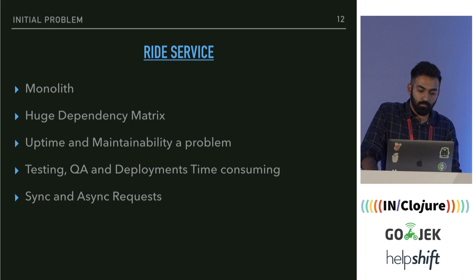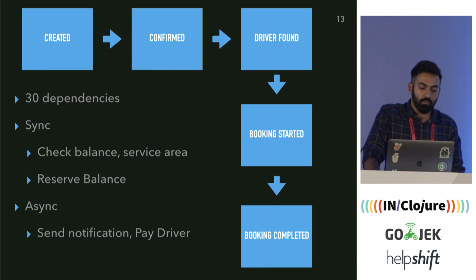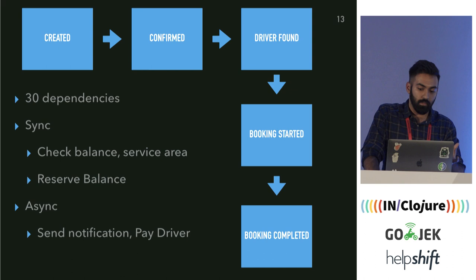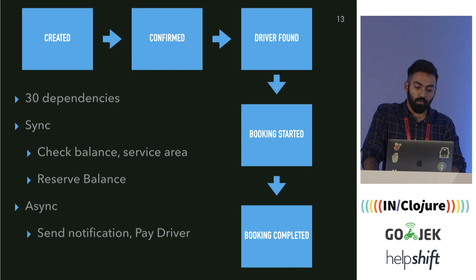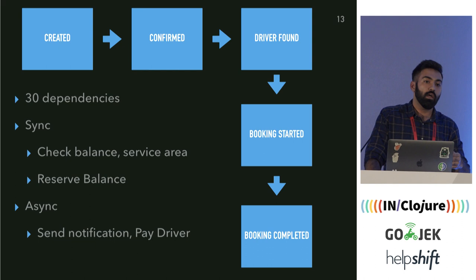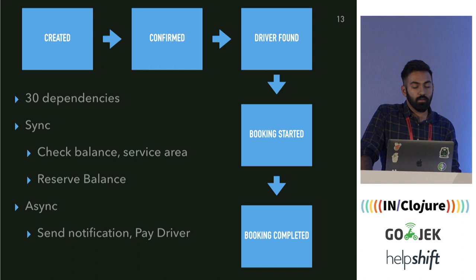To give you context, this is a basic flow of what happens at Ride Service. Whenever you book a ride, a booking-created event is created. We then have some checks in place — for example, you don't want to book a ride from here to Hyderabad as that distance doesn't make sense. We check how long the ride is and whether you have enough balance. If everything passes, we go to booking confirmed.